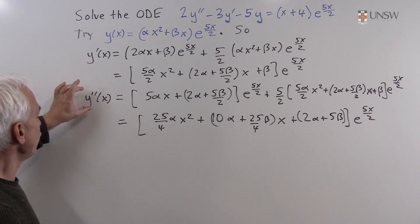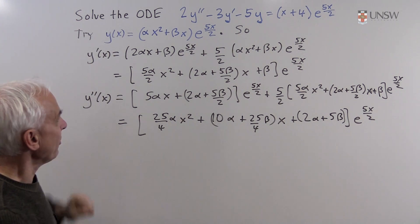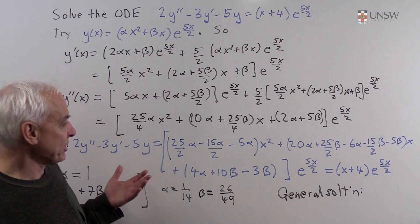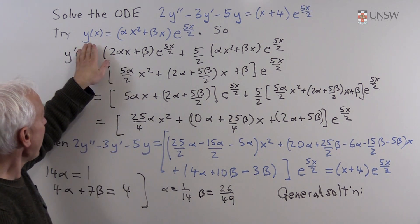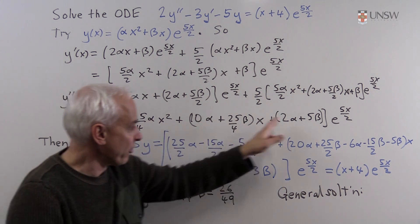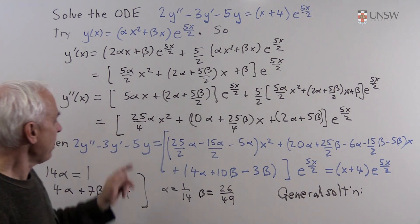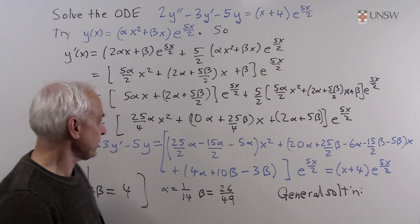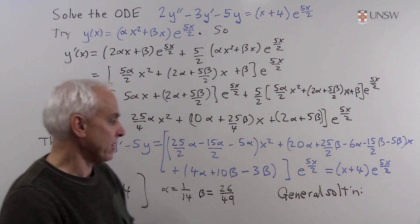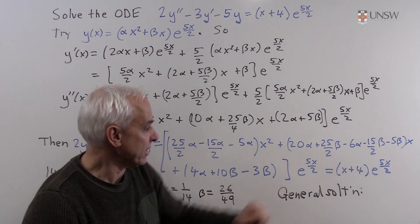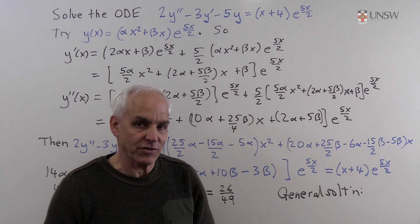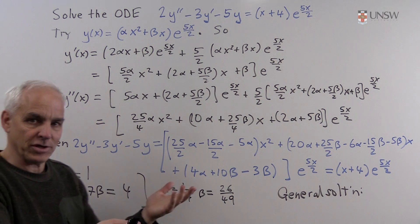Now we substitute into the full differential equation: 2y'' - 3y' - 5y should equal (x + 4)·e^(5x/2). We take 2 times y'', minus 3 times y', minus 5 times y, all multiplied by e^(5x/2), and set it equal to the right hand side. The expression has a quadratic part, a linear part, and a constant part. The x² coefficient turns out to be 25/2 - 15/2 - 5 = 0, which is correct since there's no x² on the right hand side.